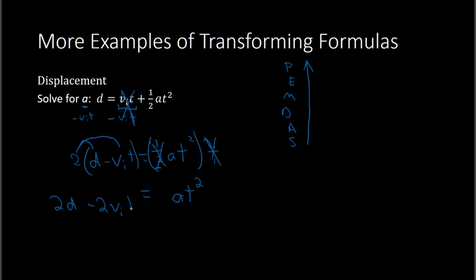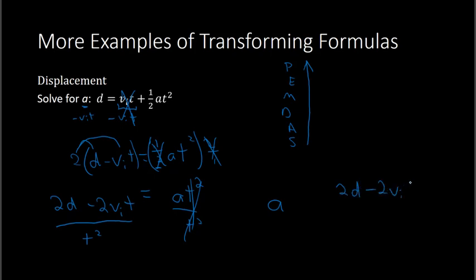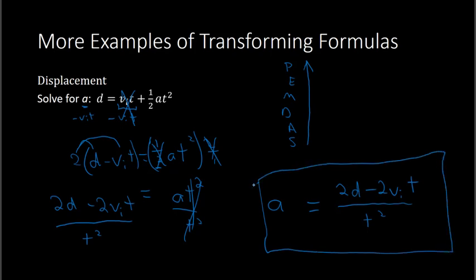So I have 2d minus 2 times vᵢ times t. Then to get rid of the t-squared — we have a times t-squared — I divide. I divide both sides by t-squared; that will cancel. So on the right side I have a, and on the left side I have 2d minus 2vᵢt, all over t-squared. Putting a on the left side: a equals 2d minus 2 times v sub i times t, all over t-squared.